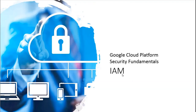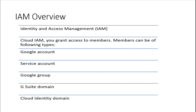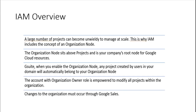Let's talk about Identity and Access Management. With IAM you can grant access to members, who can be any of the following types: a Google account, a service account, a Google Group, a G Suite domain, or a Cloud Identity domain. The choice of which to use depends on whether you have an organization, whether you're using G Suite or Cloud Identity — these are important things to think about.